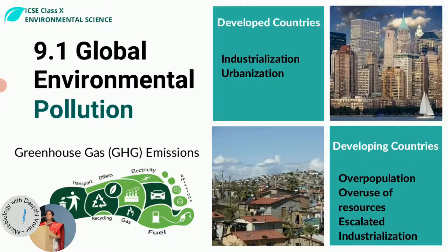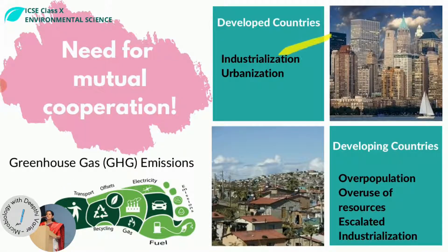Rich countries are responsible for two-thirds of the carbon that has entered the atmosphere since 1850, because they had industries set up much before the developing nations. The Intergovernmental Panel on Climate Change (IPCC) says there should be an absolute reduction — every country has to reduce. On the other hand, developing countries say they have just entered the race and it's not fair to put a block on controlling emissions right away. This is the continuous debate between developed and developing countries as to who has more emissions and who should take a major role in controlling them.